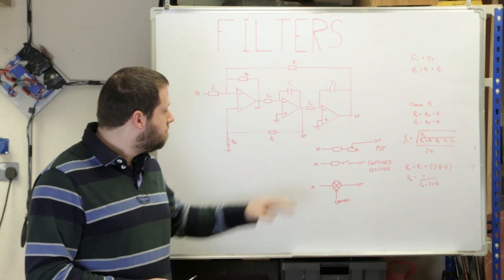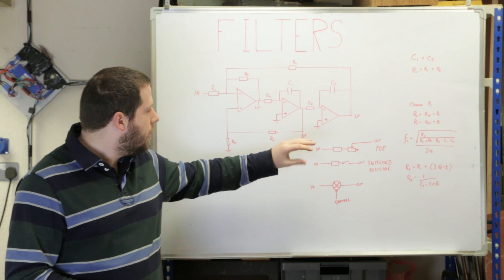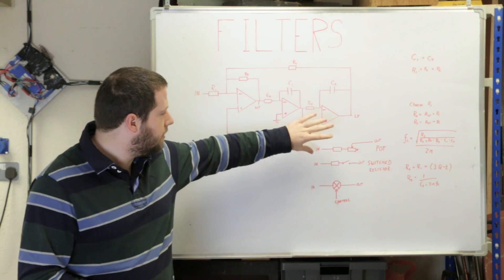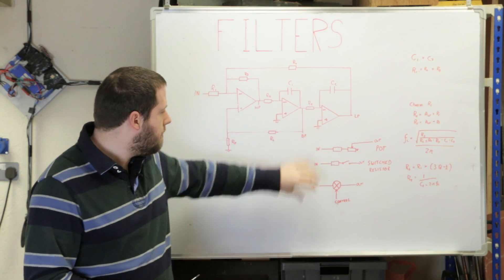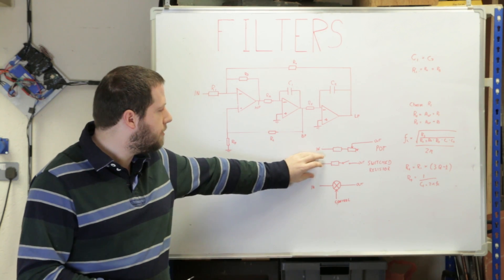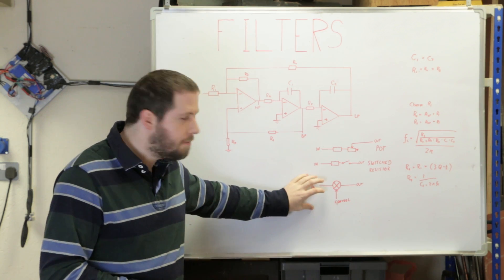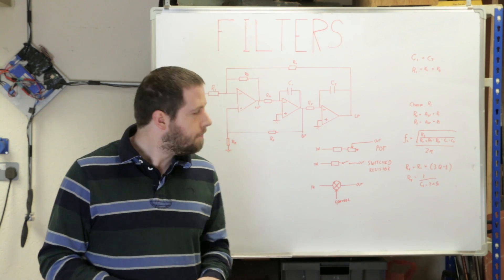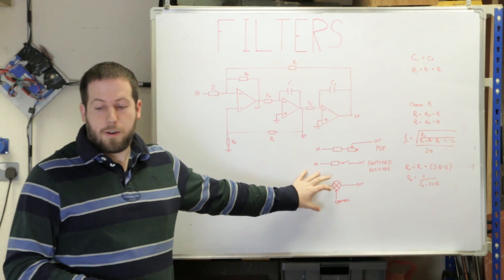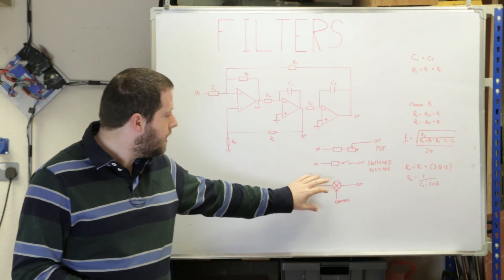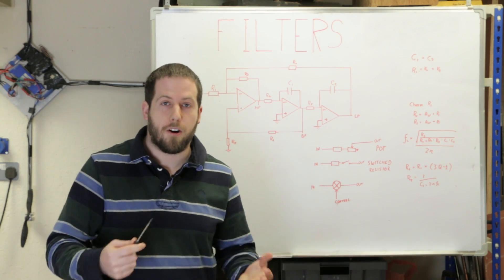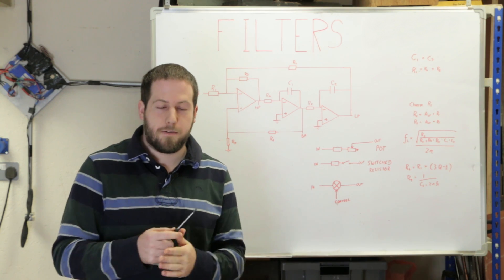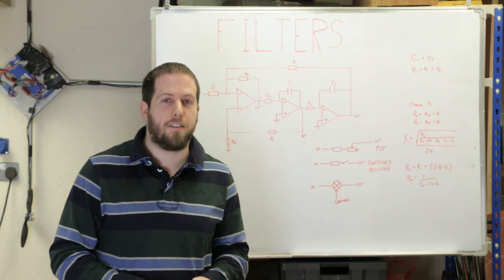So we've got three different options. I'm not going to build the digipot up because there's not really a lot of advantages to building that up, but what I will do is build the switched resistor and the multiplier option. Let's have a look at their performance and see how they compare.